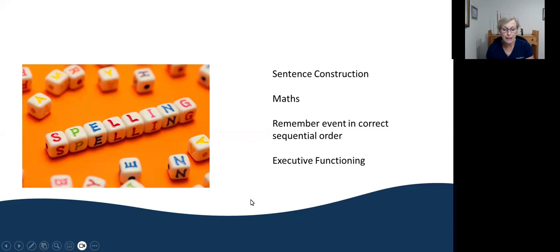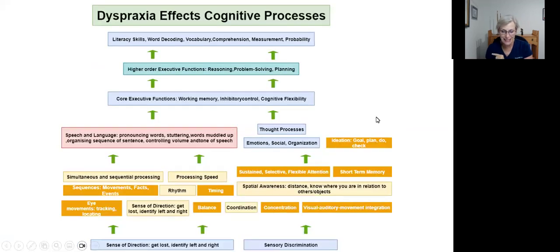I will show you the last image. And this is this one. And I hope you can see it. But it's very small because there is so much information that I want to put in here. At the bottom, you get your sensory modulation discrimination. Then all these orange and yellow are covered by the Chaotic Kids exercises. Sequential processing, sequences of movements, of facts, of events. Eye movements, sense of direction, left and right, balance, timing, coordination, visual, auditory and movement integration.